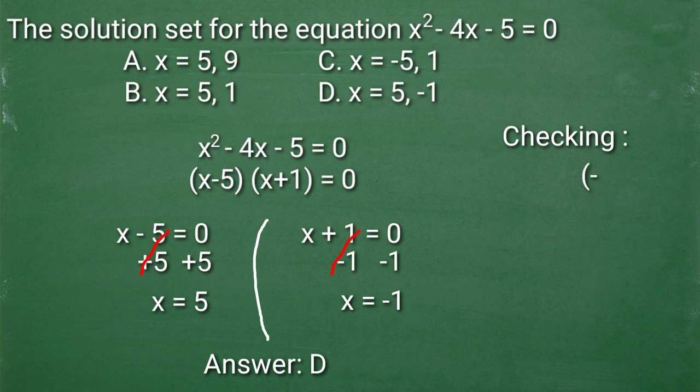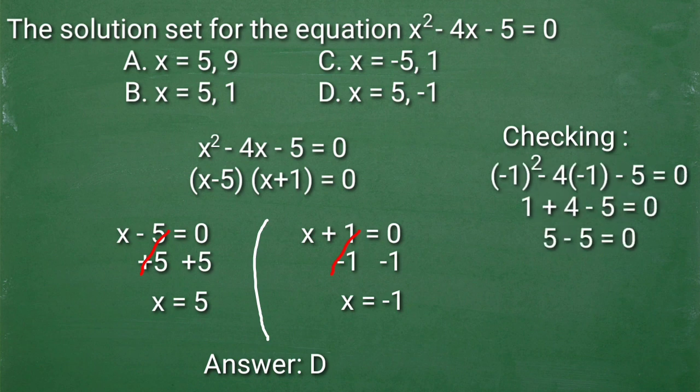Next is negative 1 squared minus 4 times negative 1 minus 5 is equal to 0. 1 plus 4 minus 5 is equal to 0. 5 minus 5 is equal to 0. And 0 is equal to 0. So ibig sabihin, check pa din.